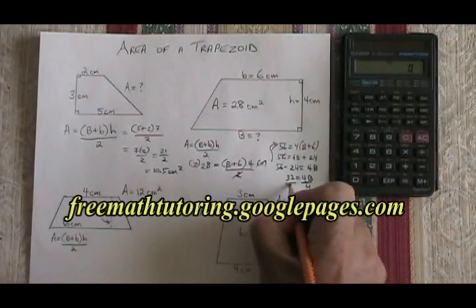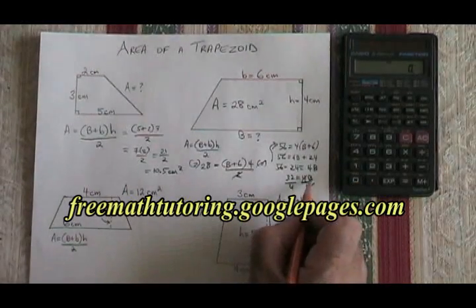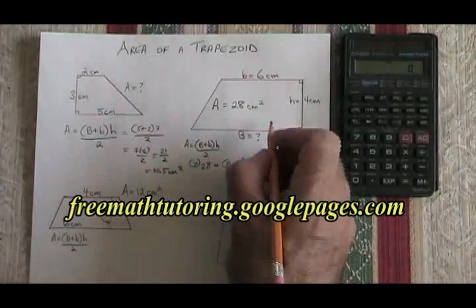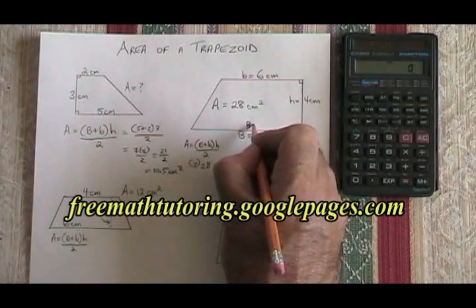Divide both sides by 4. These 4s cancel, and my B is equal to 8. I'm running out of space. I'll put it here. Big B is equal to 8.